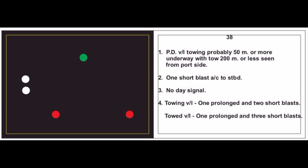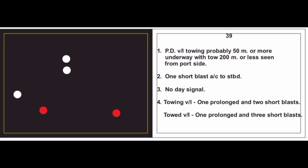Card 38: Power driven vessel towing, probably 50 meters or more, underway with tow 200 meters or less, seen from port side. Our responsibility to keep clear — give one short blast, alter course to starboard. No day signal. Towing vessel: one prolonged and two short blasts; towed vessel: one prolonged and three short blasts. Card 39: Same — power driven vessel towing probably 50 meters or more, tow 200 meters or less, seen from port side. One short blast, alter course to starboard. No day signal. Towing: one prolonged and two short; towed: one prolonged and three short blasts.